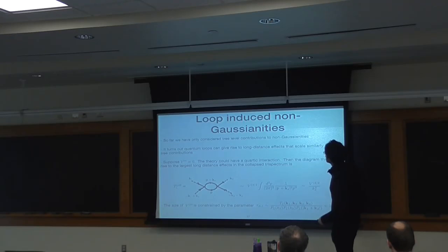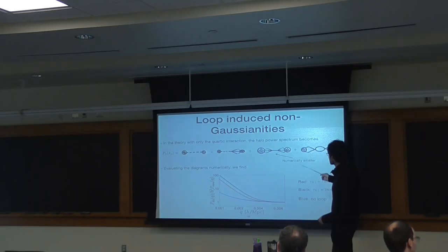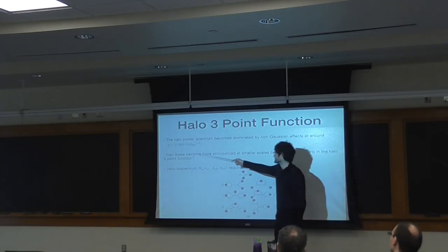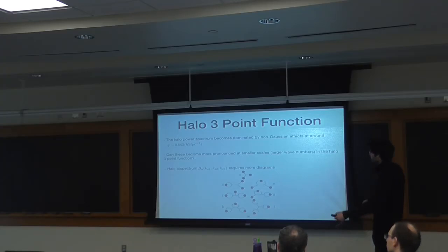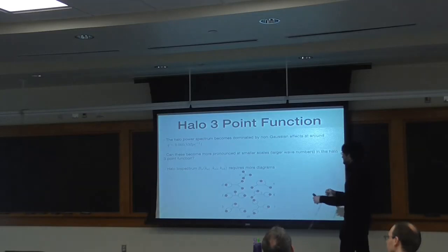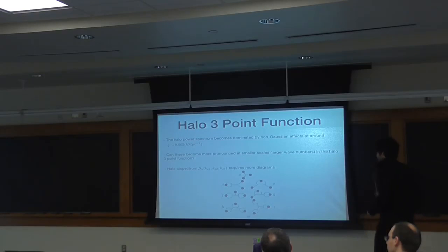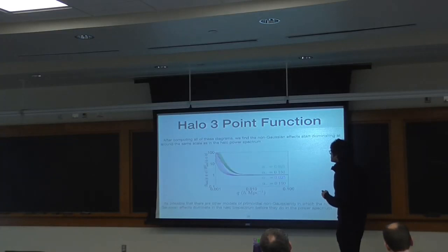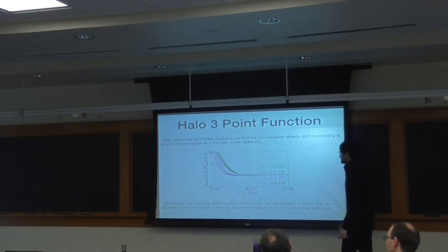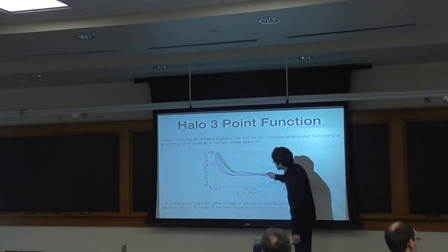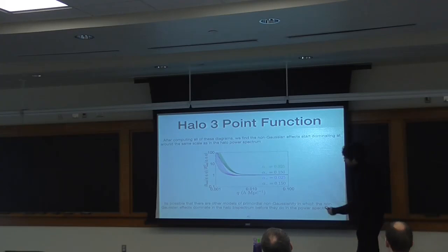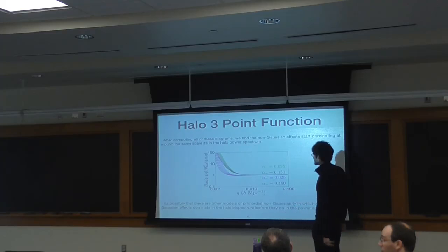In the interest of time, I'm going to skip over the stuff about loops — just know that loops can give rise to interesting long-distance effects that could be seen in the power spectrum of halos. For the halo three-point function, we computed it in this theory and found that the non-Gaussian effects start taking off at around the same scale as they did for the two-point function, around 0.005 h-inverse megaparsecs. However, once the non-Gaussian effects start taking off, they really get going and get much larger than they did in the halo two-point. Unfortunately, they start at around the same length separation as they did for the halo two-point.